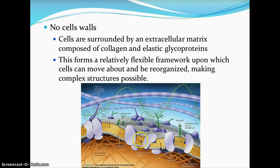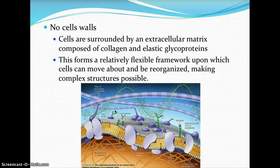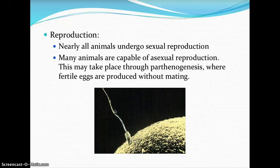If you look at the diagram, you can see the extracellular matrix following the phospholipid bilayer, or plasma membrane. All cells in biology have a biological membrane composed of phospholipids with embedded integral and peripheral proteins on one side, and carbohydrate chains with glycolipids or glycoproteins attached to the fibers of the extracellular matrix. This extracellular matrix forms a relatively flexible framework upon which cells can move and be reorganized, enabling animals to have complex structures.